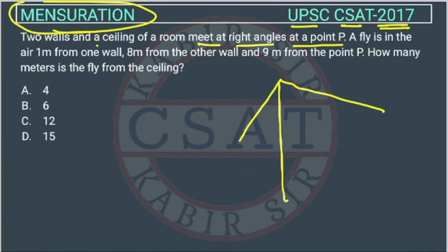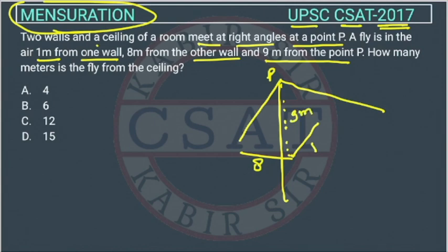A fly is in the air one meter from one wall. Suppose the fly is here. This distance is one meter from one wall and eight meters from the other wall and nine meters from the point P. The point P is where they are meeting here. From here the distance of this point they have given. This is nine meters. How many meters is the fly from the ceiling?